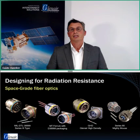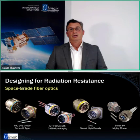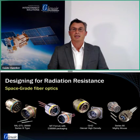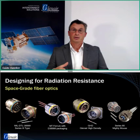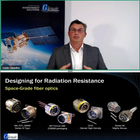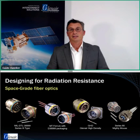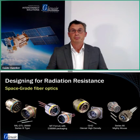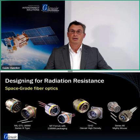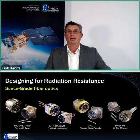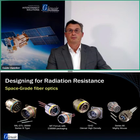Fiber optics are increasingly deployed in space. When optical fibers are subjected to space radiation, they can darken — insertion loss increases. By selecting proper glass fiber materials, this effect can be negated to maintain intact transmission. The fiber lengths on a spacecraft are typically very short, so it's not always a major problem, but some systems require special radiation-hardened fibers to prevent darkening.